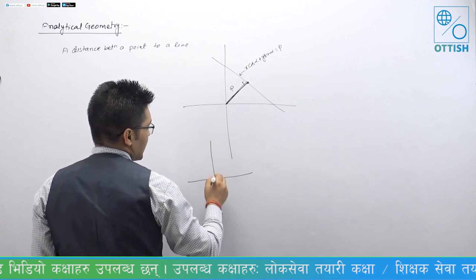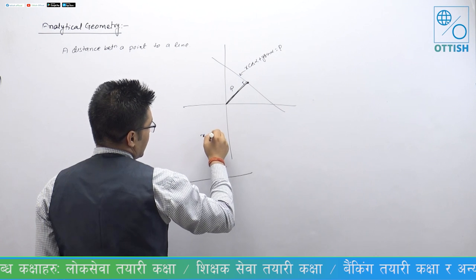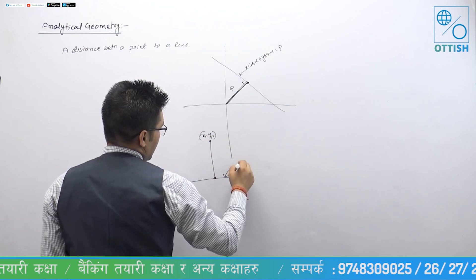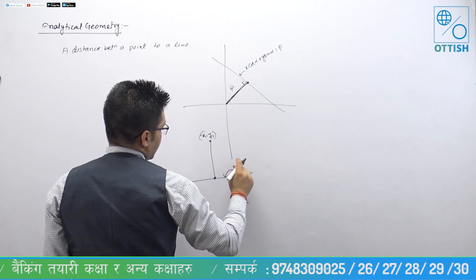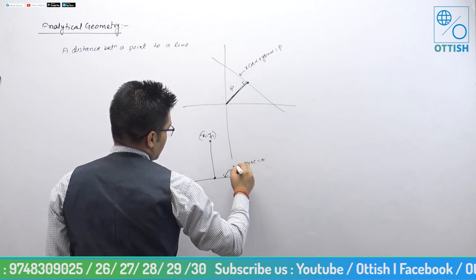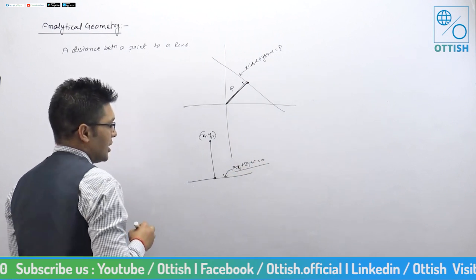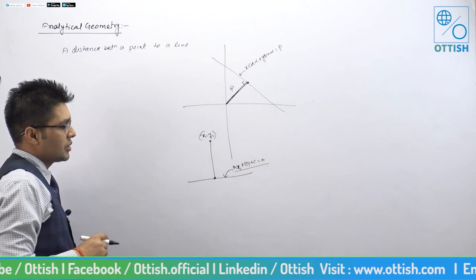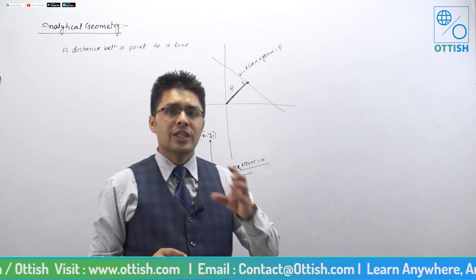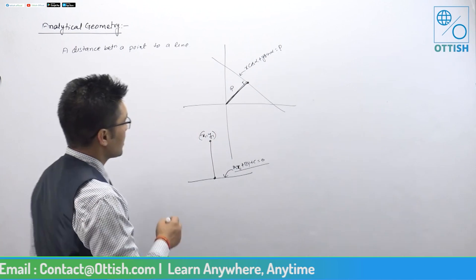Suppose you have a point (x₁, y₁) and a line ax plus by plus c is equal to 0. This is the line, this is the point, and this is how to calculate the perpendicular distance.